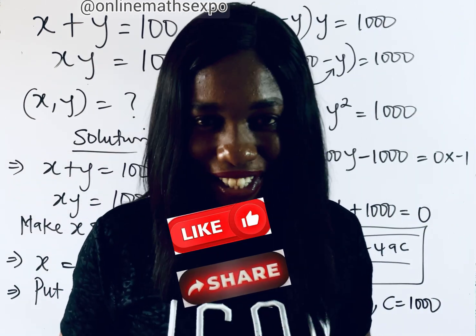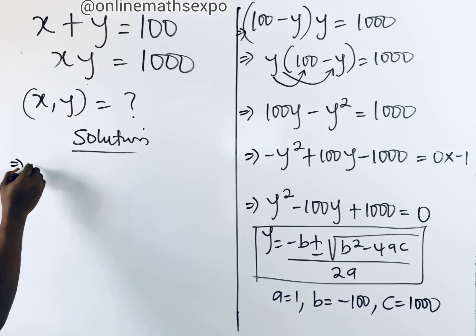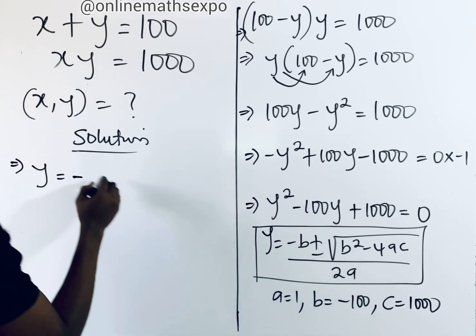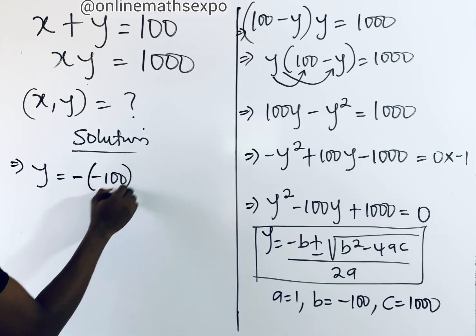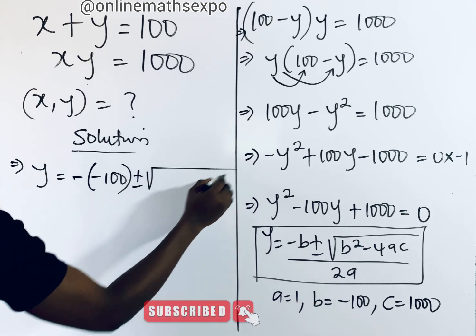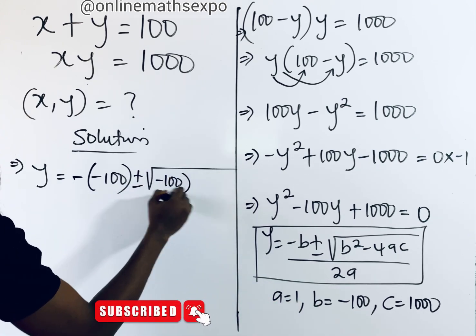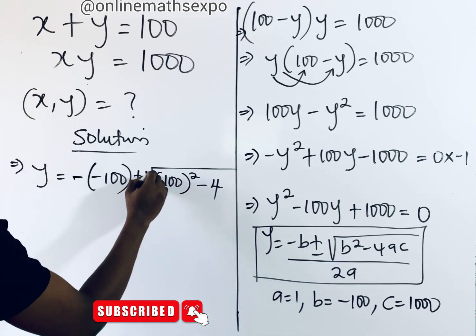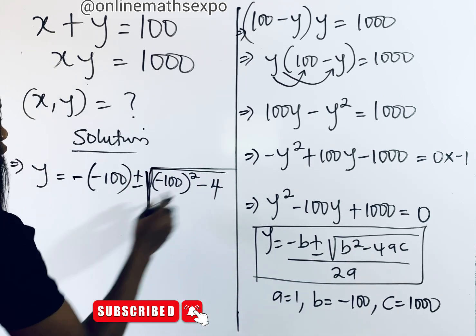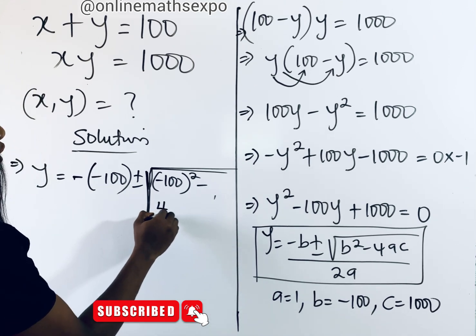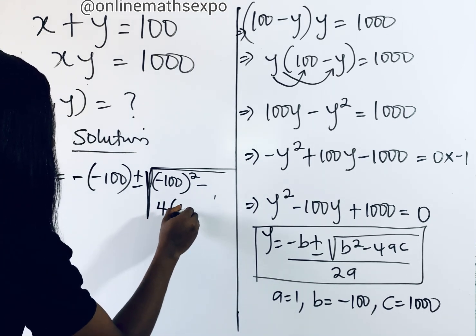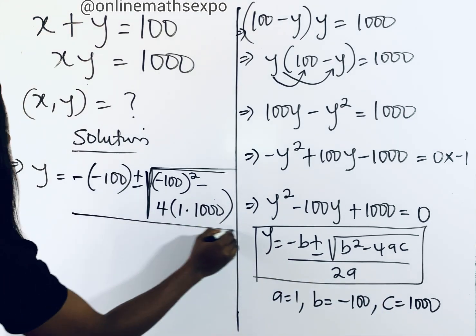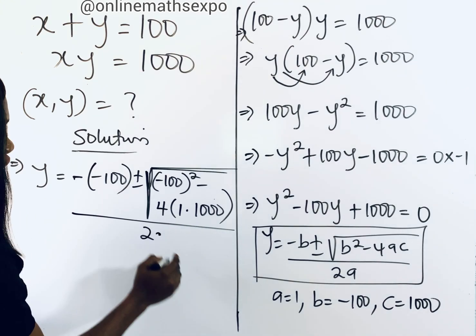Plugging these values into the quadratic formula, we have y equals negative b — and since b is negative 100, negative b is positive 100 — plus or minus the square root of (negative 100) squared minus 4 times 1 times 1000, all divided by 2 times 1.